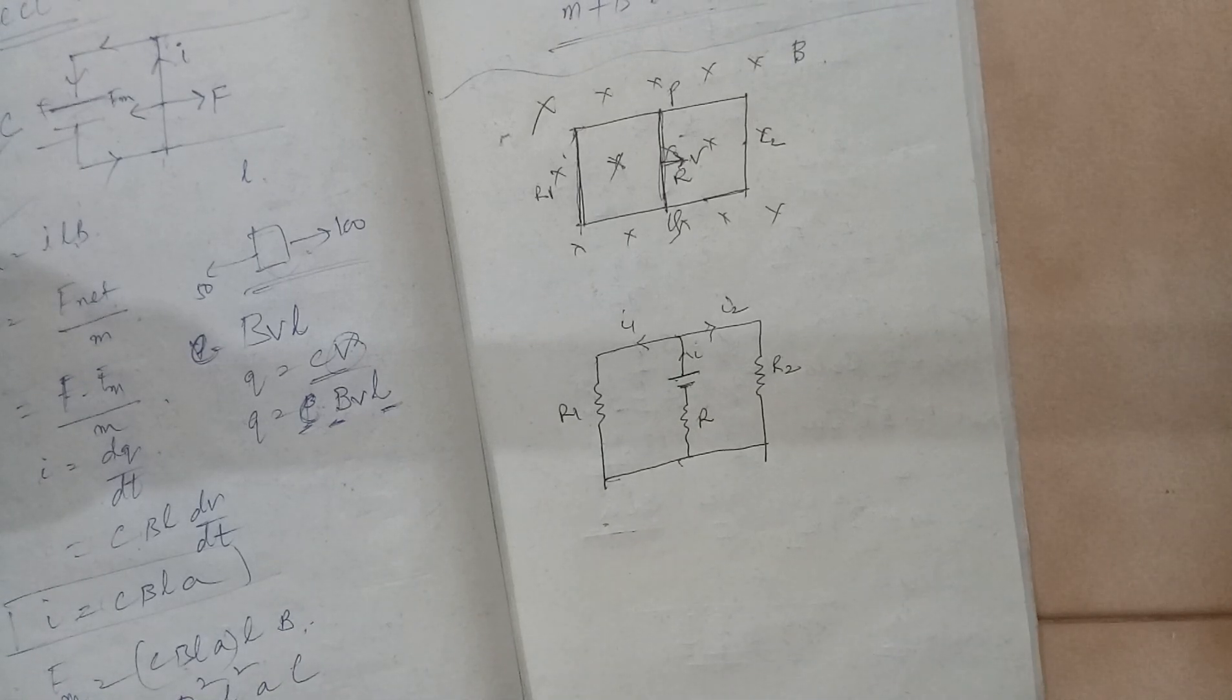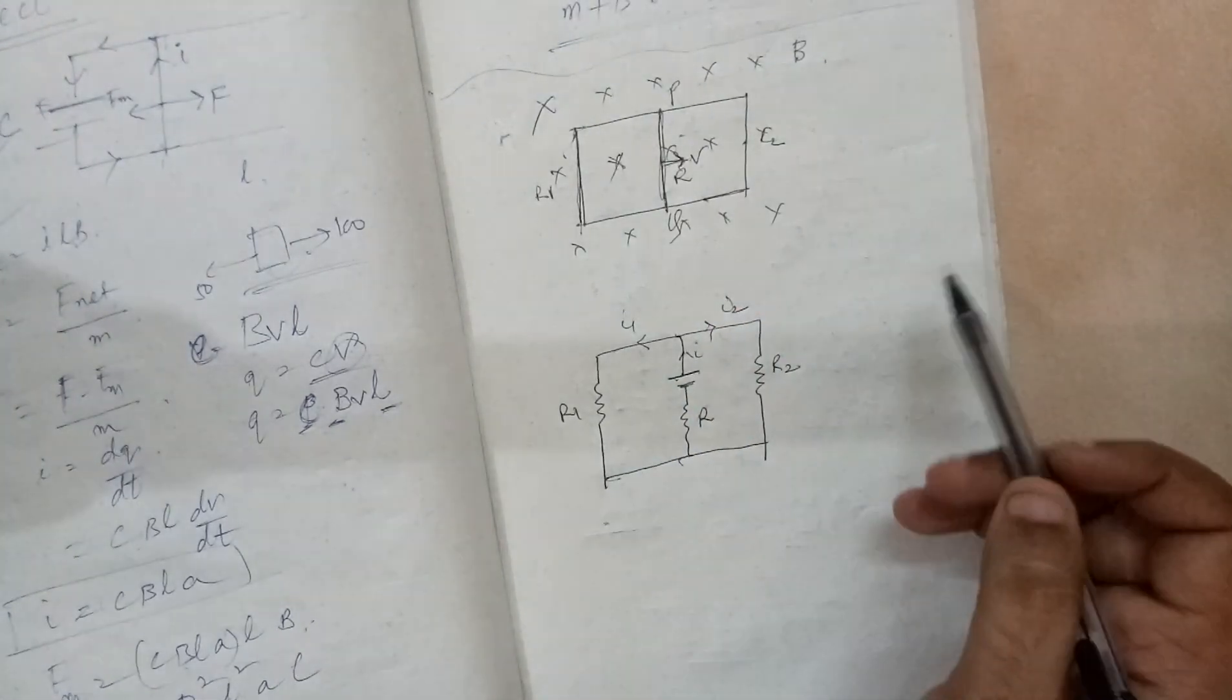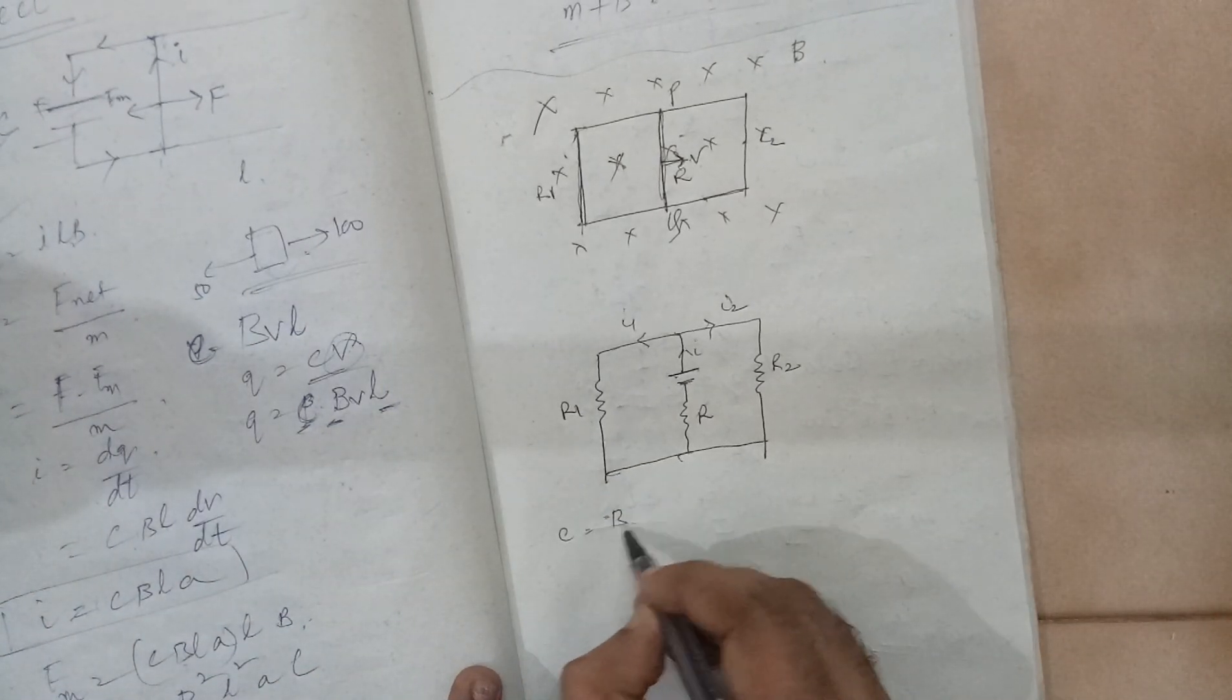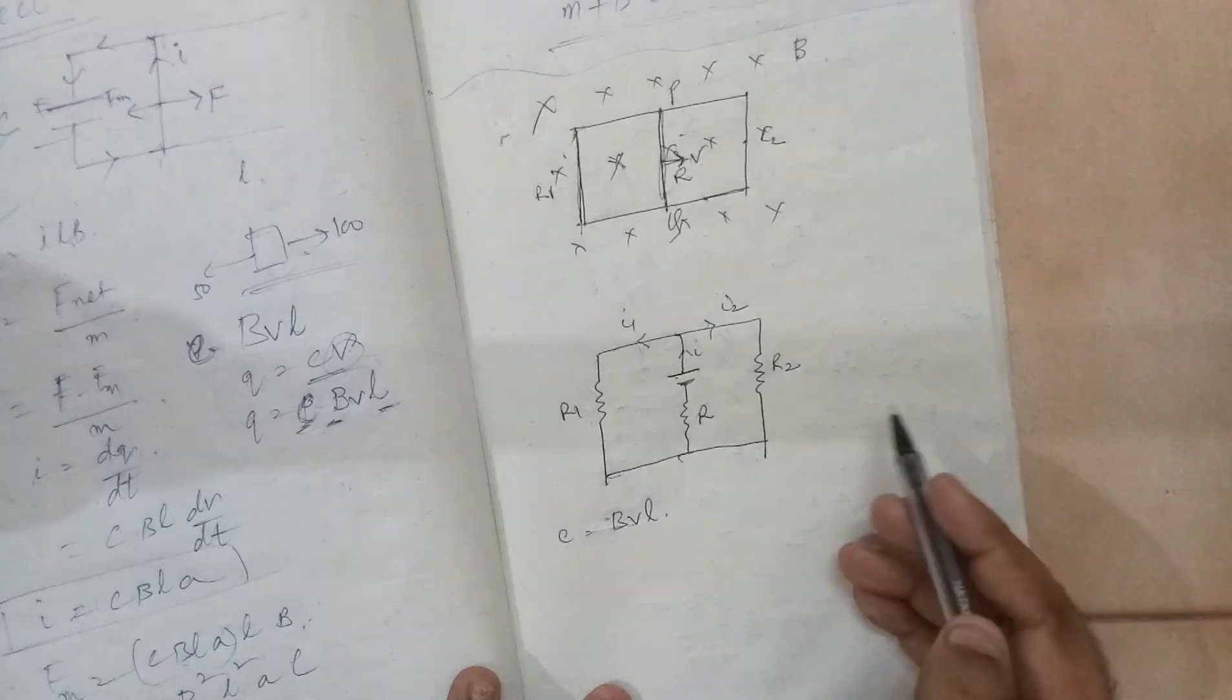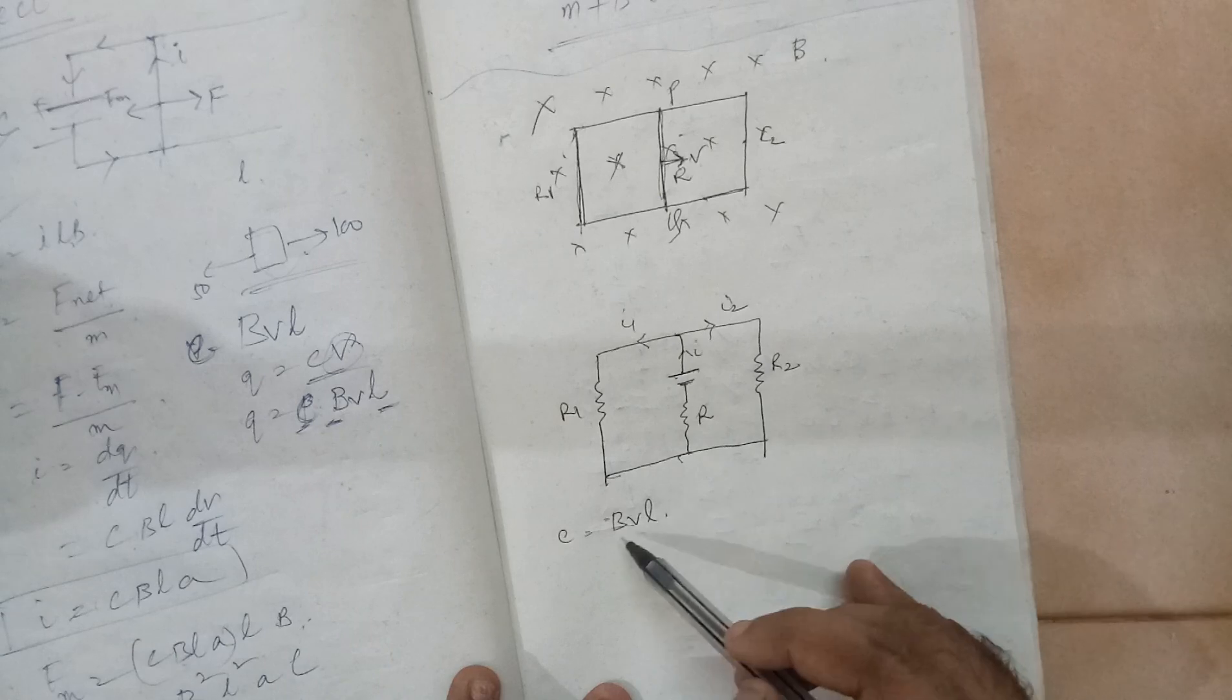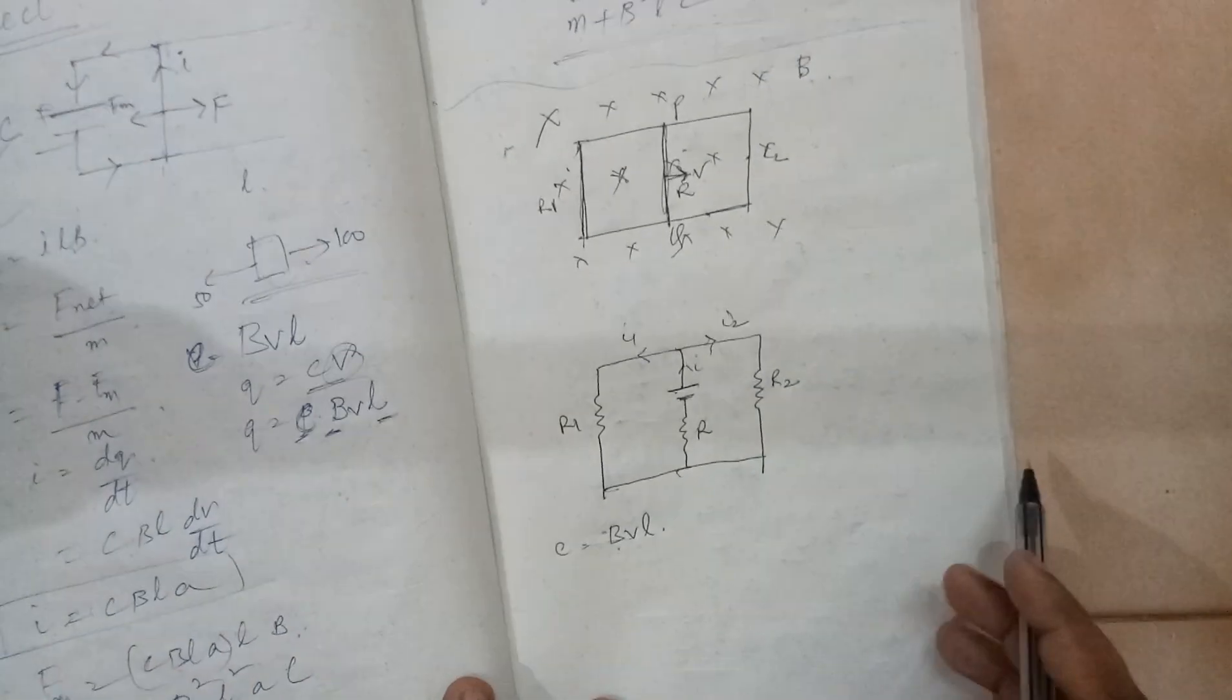Now, because this is the case of motional EMF, the E value will be B times VL. L is the length of the frame, V is the speed with which this frame is moving, and B is the magnetic field.